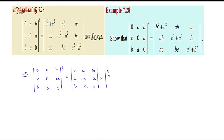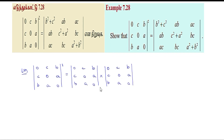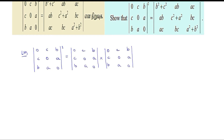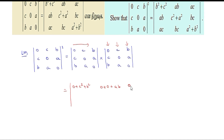Computing by row and column multiplication: first row, first column gives 0 plus C squared plus B squared. First row, second column gives 0 plus 0 plus AB. First row, third column gives 0 plus AC plus 0.